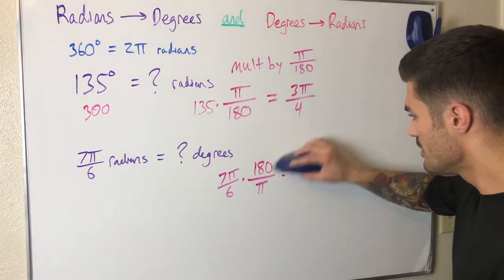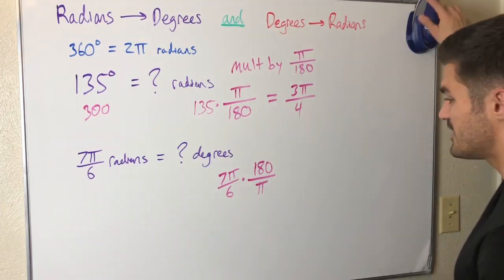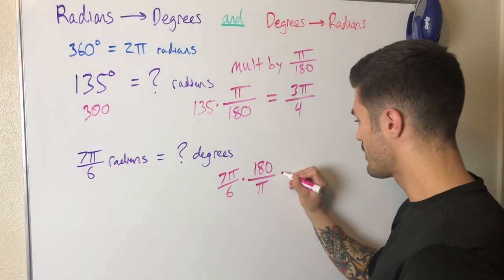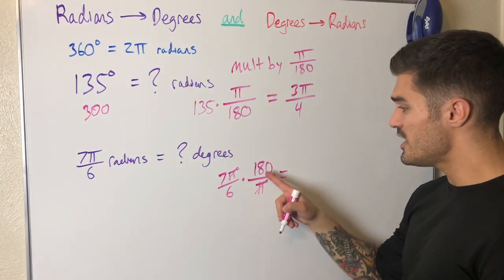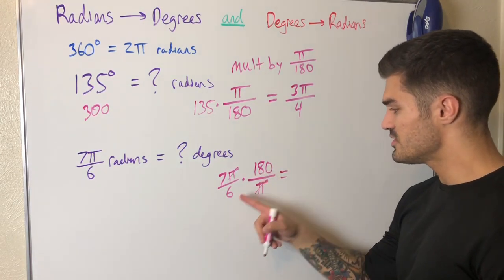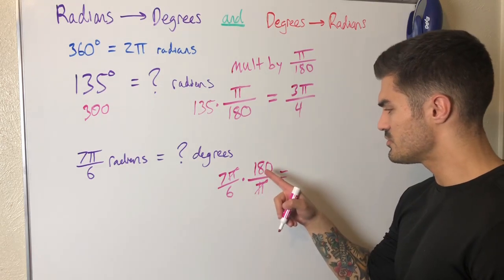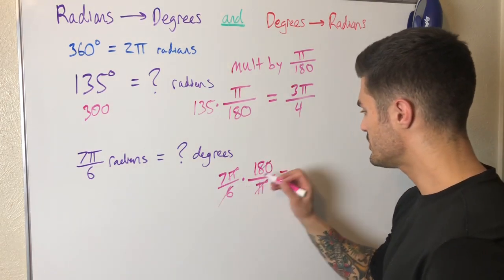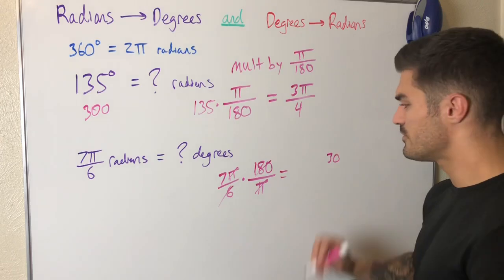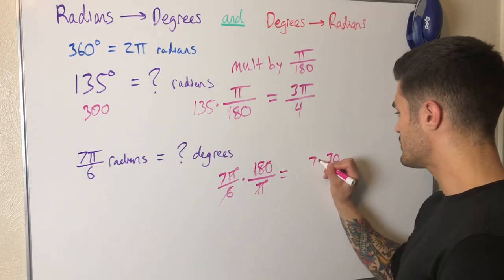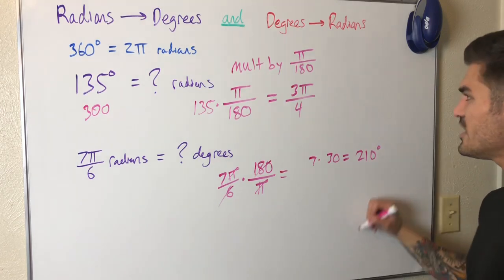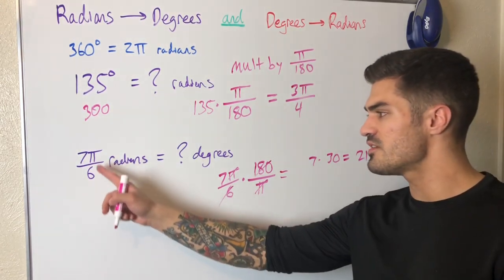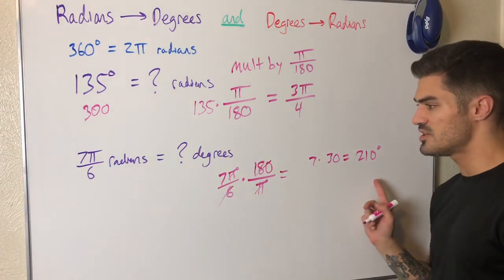Right off the bat I see that the π's cancel into each other. 6 goes into 180, 30 times—yeah, 6 times 30 is 180. Cross these out and I'm left with 30 on top and the 7, so 7 times 30 which gives me 210. So 210 degrees. That's how you convert 7π over 6 radians—that is 210 degrees.